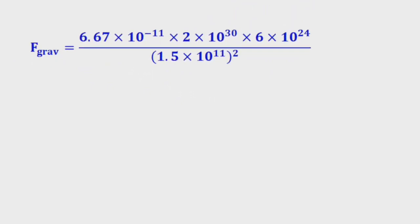By substituting the values, gravitational force of attraction equals G value 6.67 into 10 power minus 11, multiplied by mass of the sun 2 into 10 power 30, multiplied by mass of the earth 6 into 10 power 24, divided by distance 1.5 into 10 power 11 squared. Observing the powers of 10 in the numerator: 10 power minus 11, 10 power 30, and 10 power 24 give 10 power 54. Subtracting 11 gives 10 power 43.